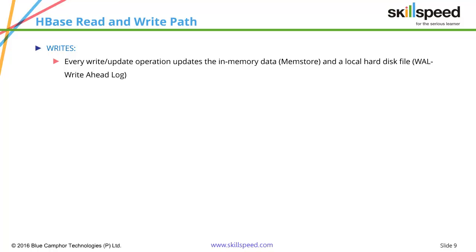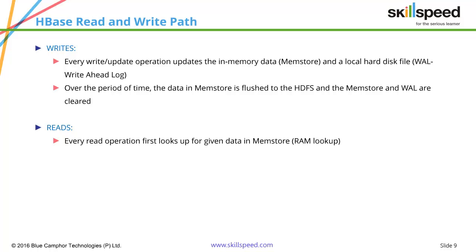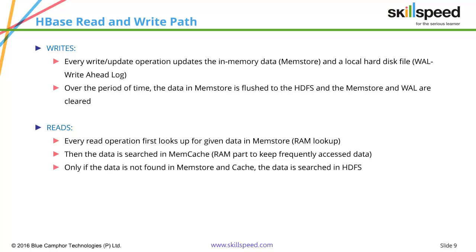At the same time as writing to memstore, HBase writes to a hard disk structure called the write-ahead log. If the machine crashes or reboots, data can be recovered from this write-ahead log. Over time, when the memstore becomes full, the data is persisted to HDFS blocks. When reading data, HBase looks at the memstore first since most recent data will be there; if not found in memstore, it checks the memcache (cache memory of RAM); if still not found, it reads from HDFS.